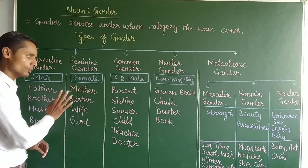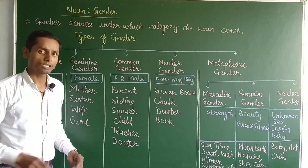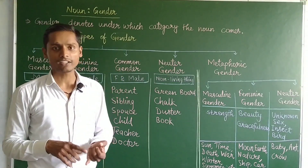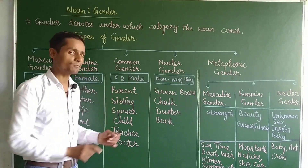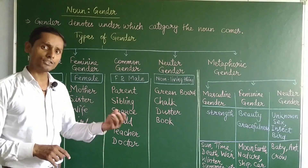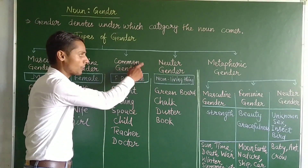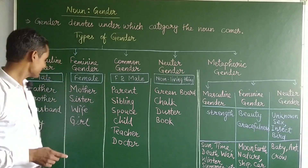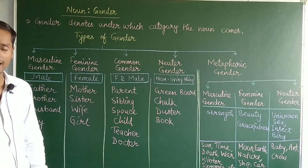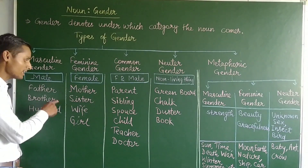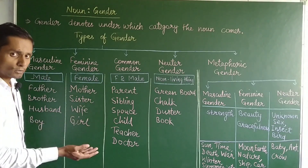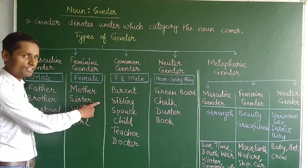Father and Mother — when we compare them, we use the word 'parent.' The parent includes both mother and father, so parent falls under common gender. Similarly, brother is masculine gender and sister is feminine gender.